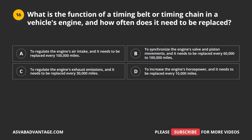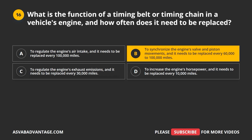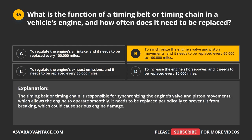Question 16. What is the function of a timing belt or timing chain in a vehicle's engine, and how often does it need to be replaced? A. To regulate the engine's air intake, replaced every 100,000 miles. B. To synchronize the engine's valve and piston movements, replaced every 60,000 to 100,000 miles. C. To regulate the engine's exhaust emissions, replaced every 30,000 miles. The correct answer is B. The timing belt or timing chain synchronizes the engine's valve and piston movements, allowing the engine to operate smoothly. It needs to be replaced periodically to prevent it from breaking, which could cause serious engine damage.